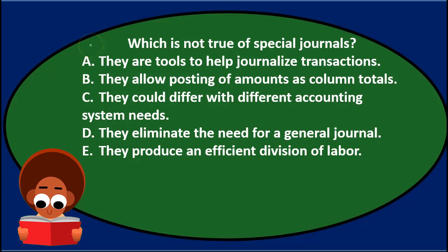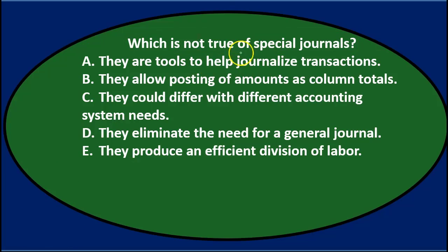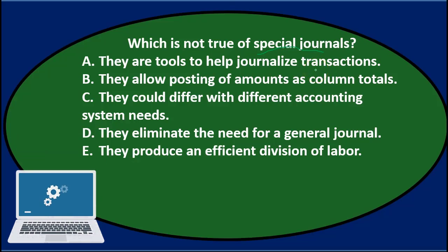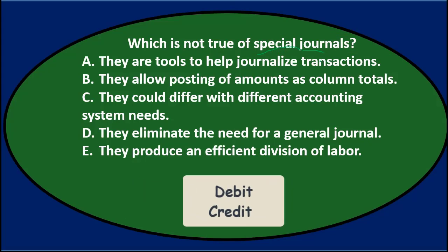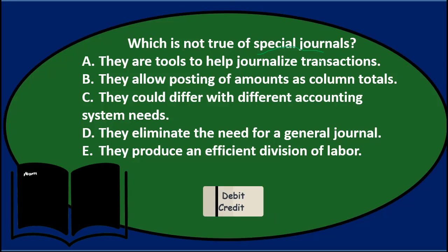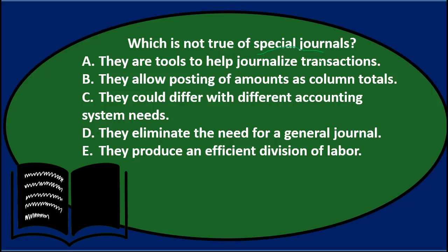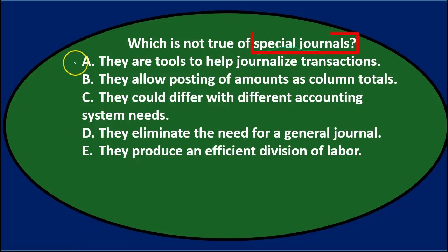We may first want to try to define what special journals are in order to eliminate options. Special journals are types of journals used in a system — typically a more manual system — that allow us to group similar transactions rather than posting each transaction into the general journal. Instead, we put each transaction into the special journals, sum them up at the end of the time period, then make one recording to the general journal and post to the general ledger.